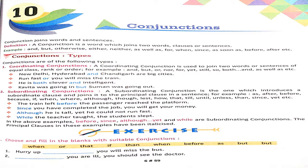So if I am talking about definition, a conjunction is a word which joins two words, clauses and sentences. So if we are talking about two sentences, we will talk about the two sentences.